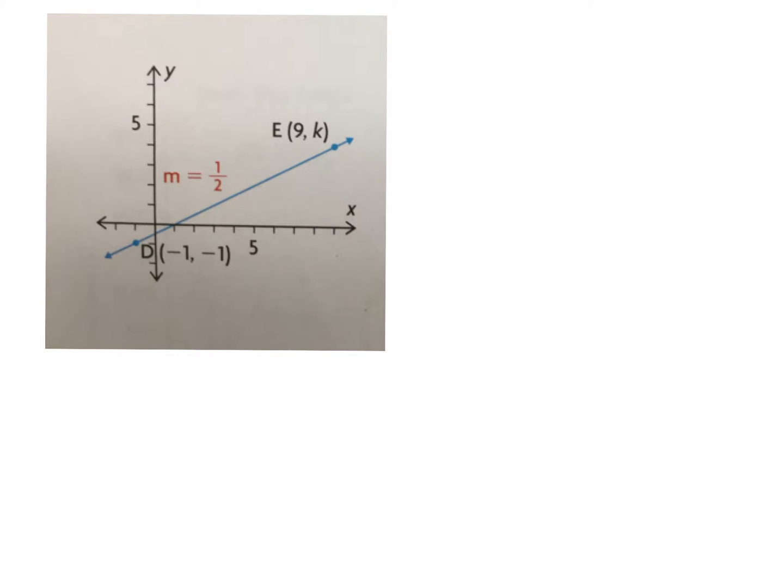Okay, so in this question we're given coordinate D, which is right here, and coordinate E, which is right here. We know that coordinate D is located at negative 1, negative 1, so that's X, Y. We have to write it in the correct order, and E is located at 9 something. We don't know the Y value of the second coordinate, right?